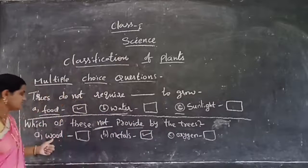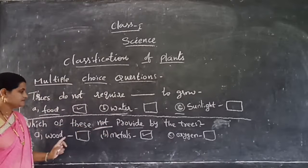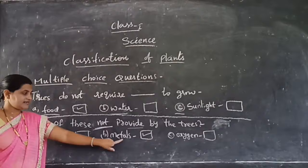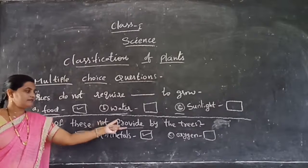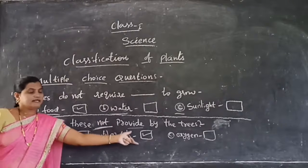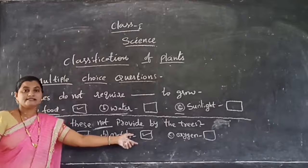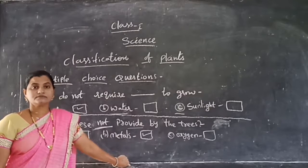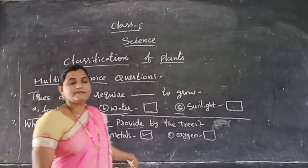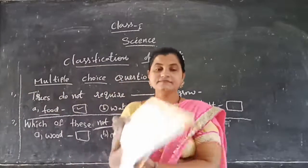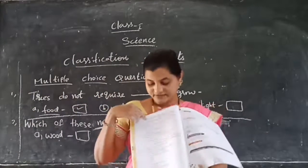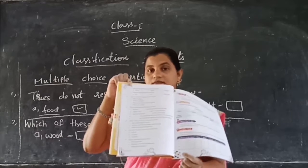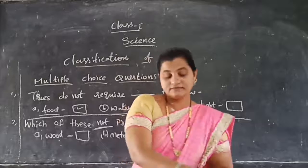Trees give and wood is also provided by the plants. Only metals are not provided by the plants. So that's why you can tick metals. Tick from your textbook like this — page number 16. That's the third option.